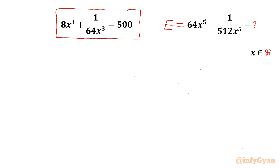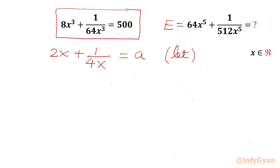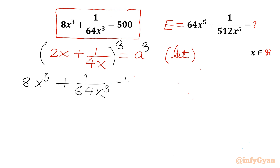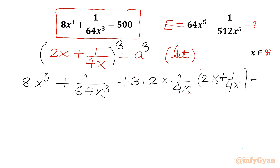Let's consider the expression equal to E and I will use the substitution a = 2x + 1/(4x). Now I will cube both sides using the (a+b)³ formula: a³ = (2x)³ = 8x³, b³ = (1/4x)³ = 1/(64x³), plus 3ab times (a+b), so 3 times 2x times 1/(4x) in bracket (2x + 1/(4x)), and the RHS will be a³.